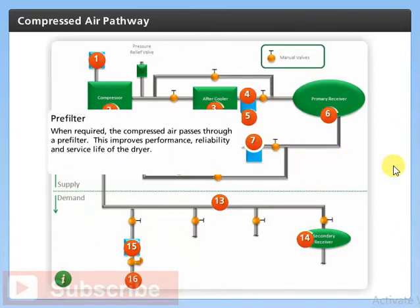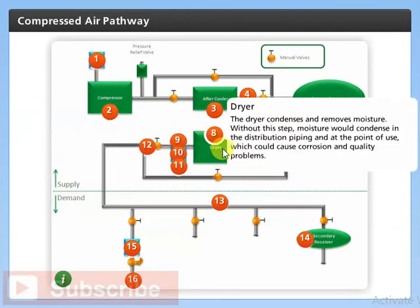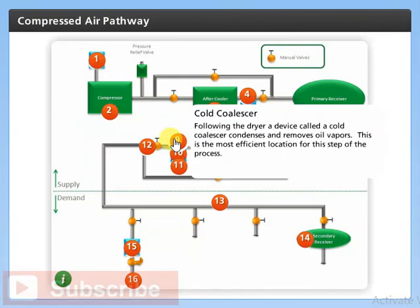When required, the compressed air passes through a pre-filter, which improves performance, reliability, and service life of the dryer. The dryer then condenses and removes moisture. Without this step, moisture would condense in the distribution piping and at the point of use, which could cause corrosion and quality problems. Following the dryer, a device called a cold coalescer condenses and removes oil vapors — this is the most efficient location for this step of the process.